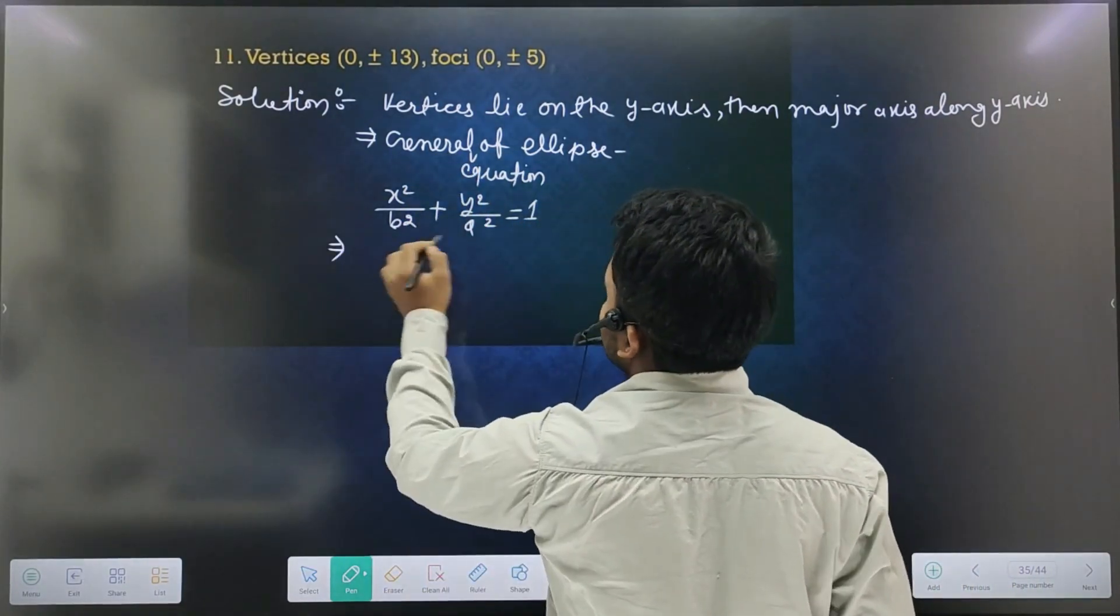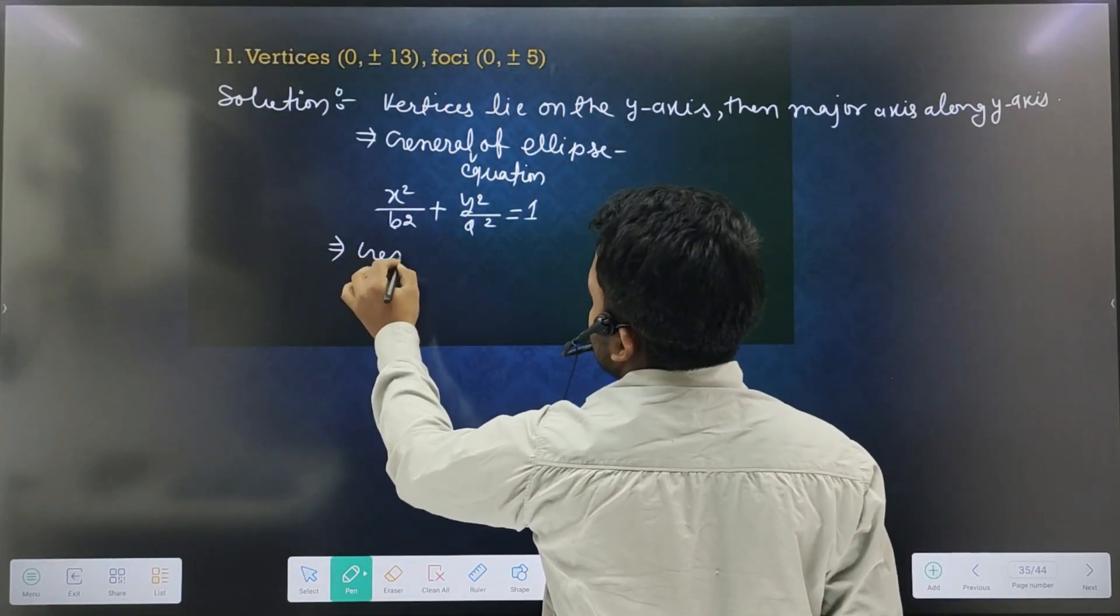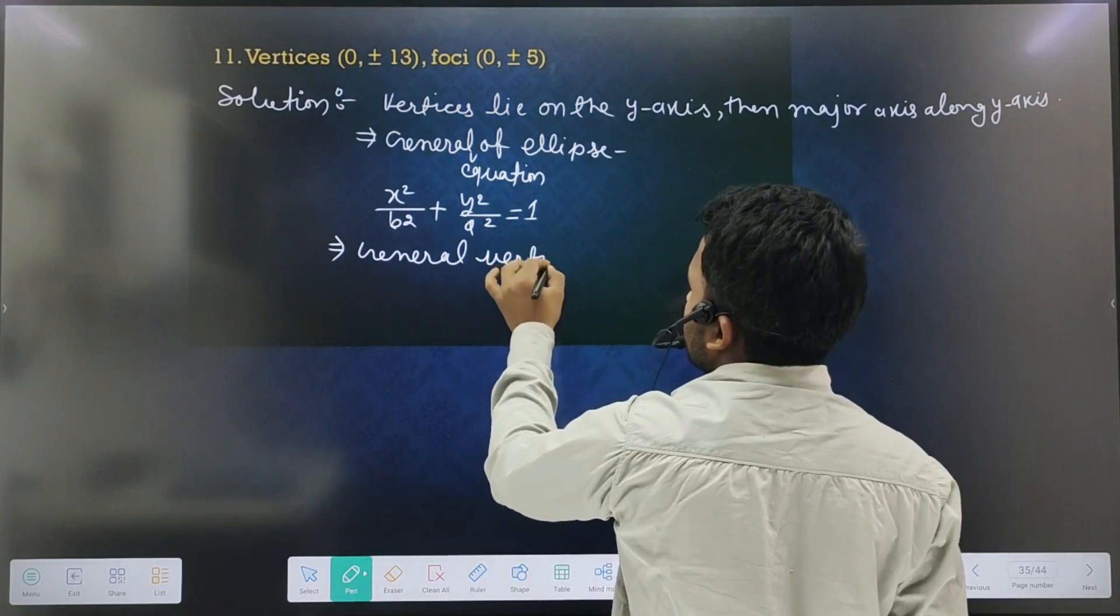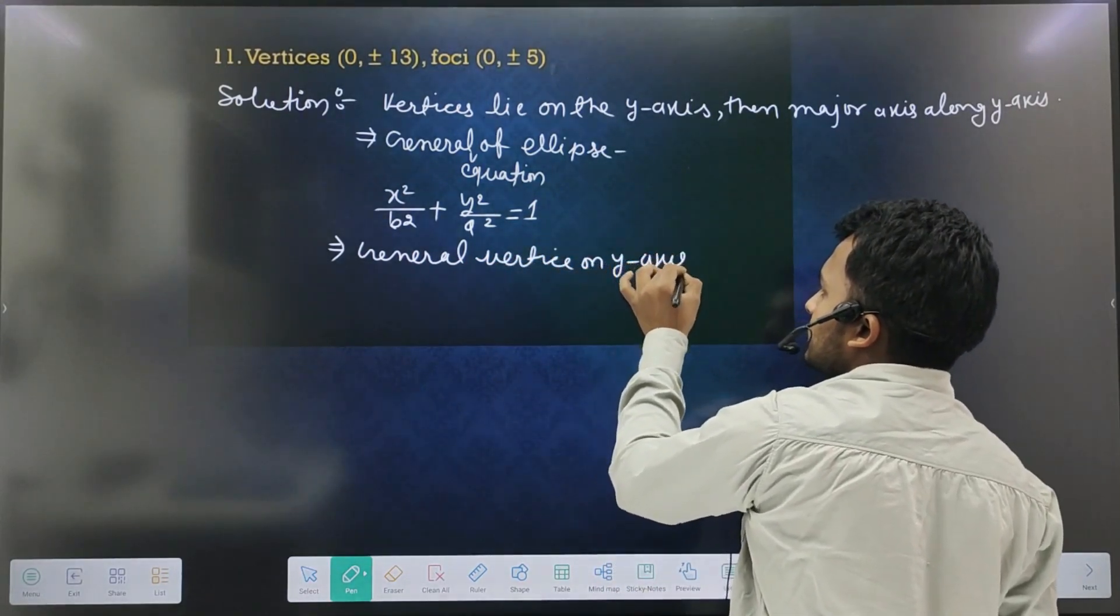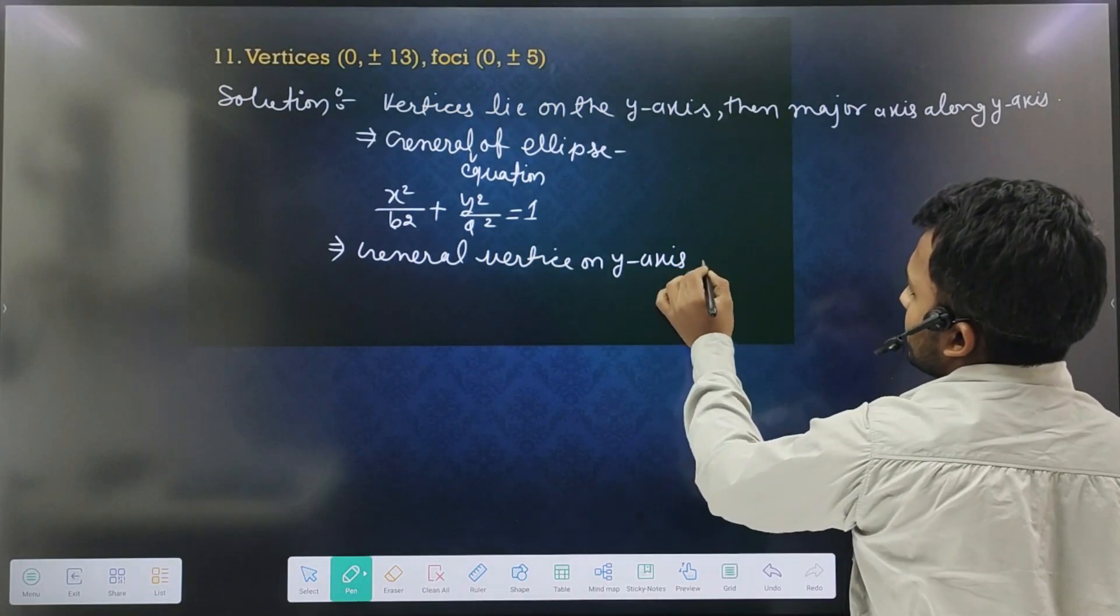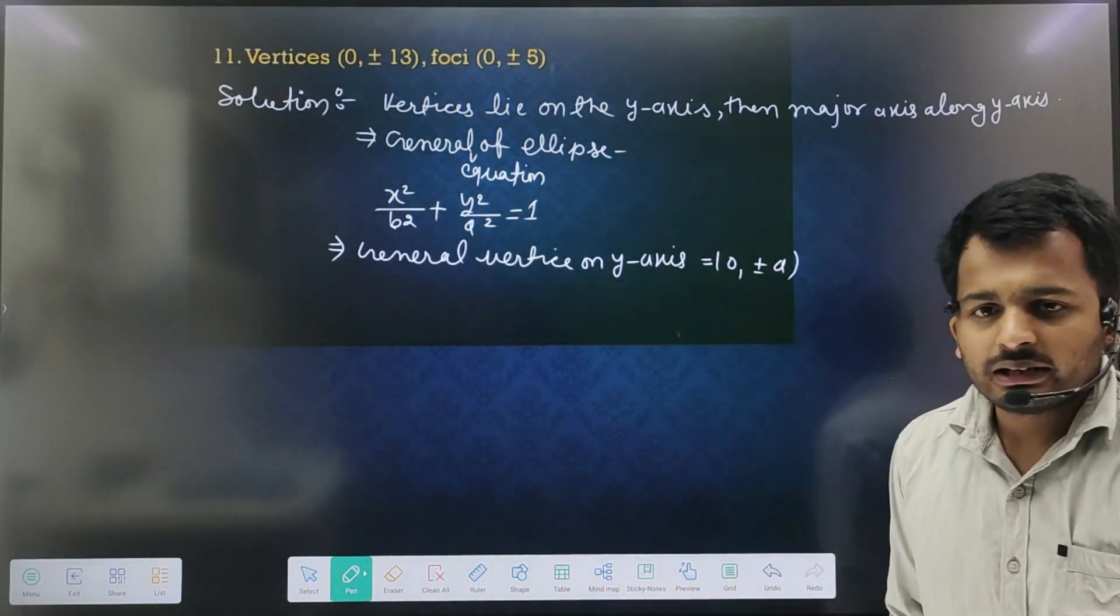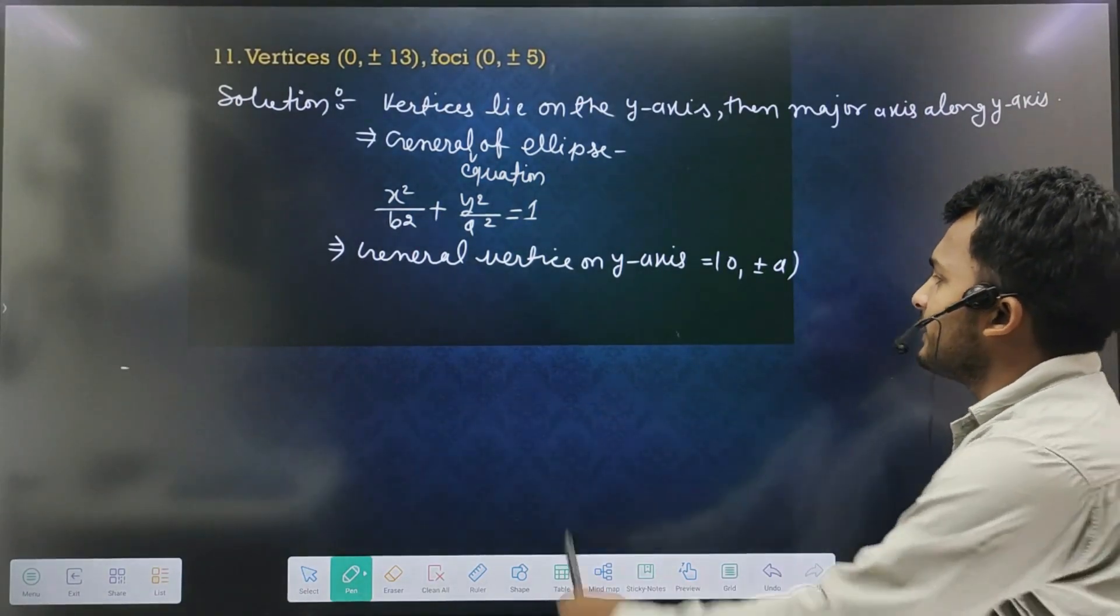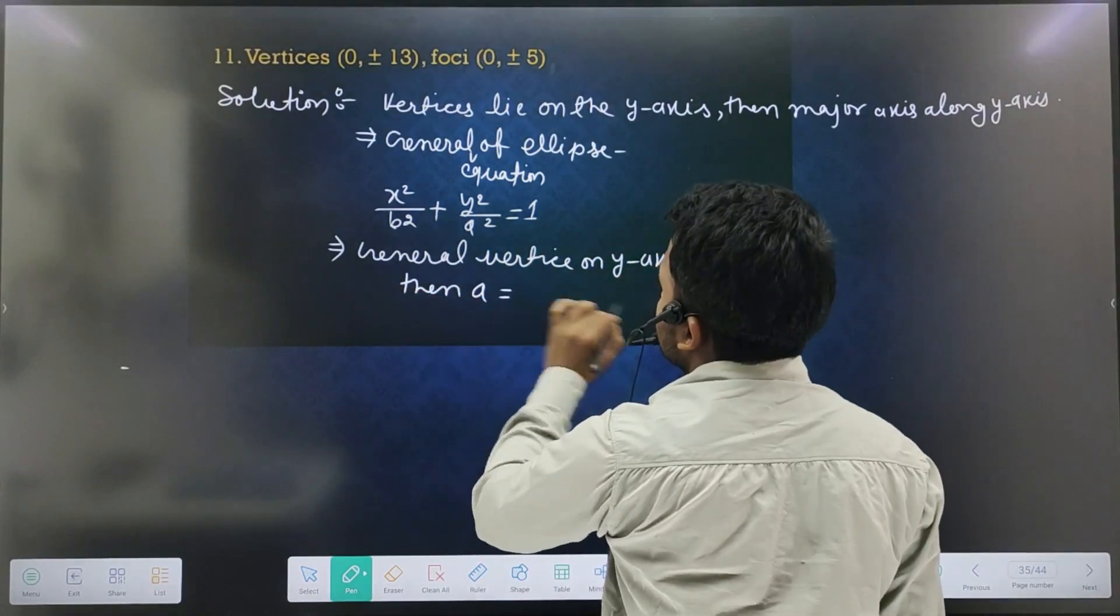What is given? From vertices, on the y-axis, what is given? Plus minus (1,0). Then a equal to 13.